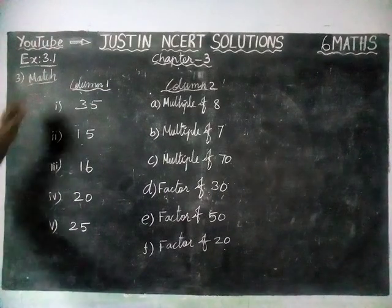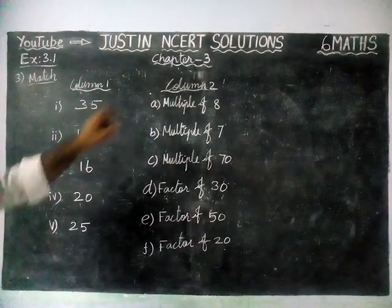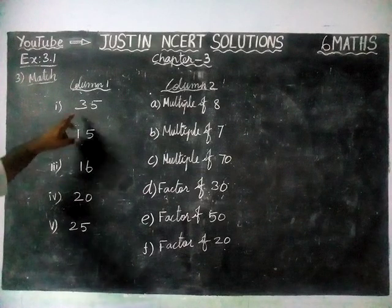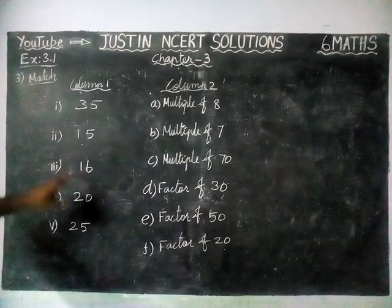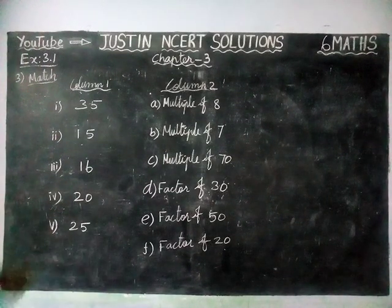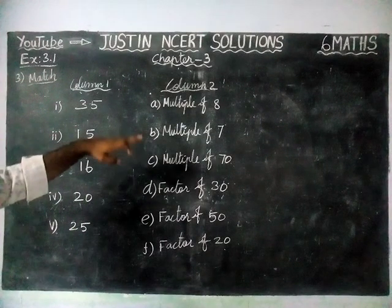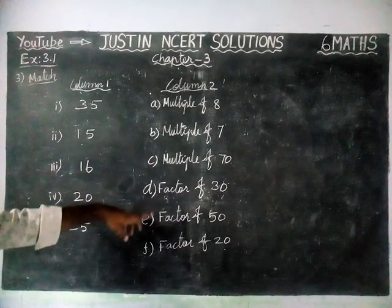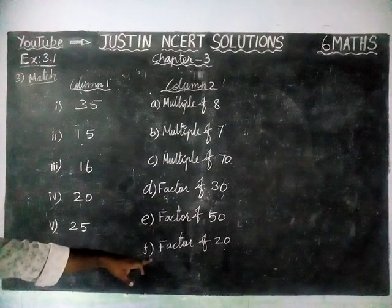We are going to match column 1 into column 2. In column 1, they have given 35, 15, 16, 20 and 25. In column 2, they have given: multiple of 8, multiple of 7, multiple of 70, factor of 30, factor of 50, and factor of 20.